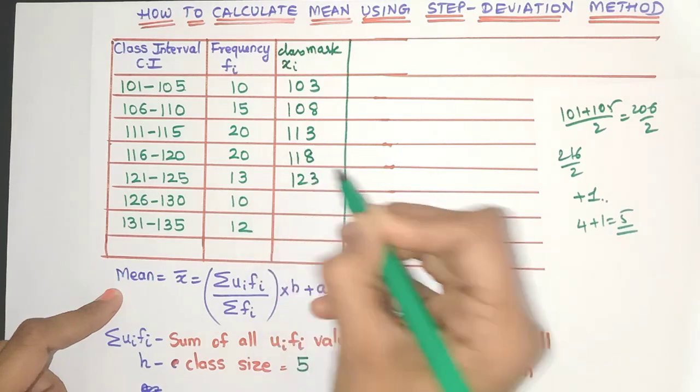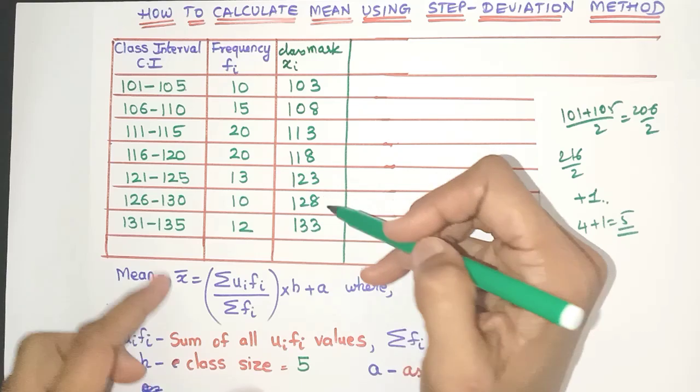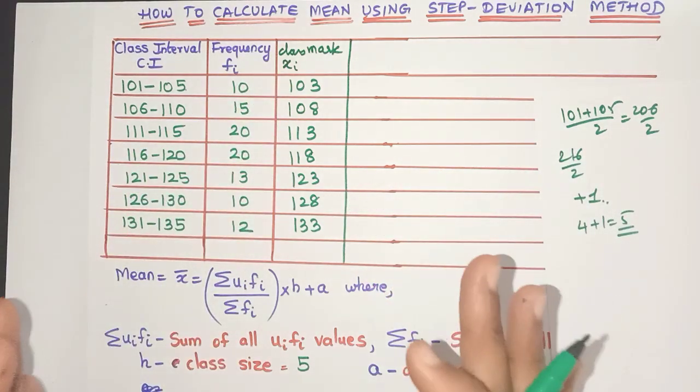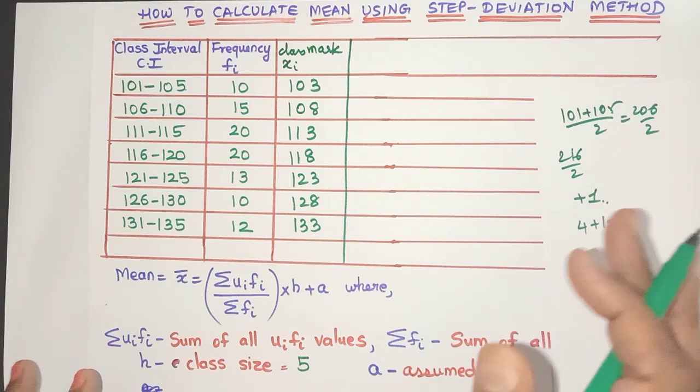So just add 5 to 108, you'll get 113. See, it's so simple. You'll get 118 and so on. You can fill and get the other xi values. Okay, now as you observe, the xi values are very big. So that's why we don't use the direct method. We'll use the step deviation method.